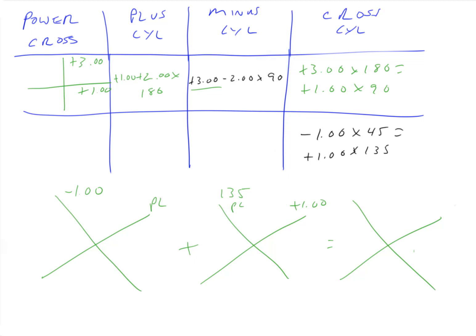Okay, so what's our power cross going to look like? Well, the power cross from this is easy. It's going to be a minus one over here because minus one plus plano is minus one. And it has to be a plus one over here because plano plus one equals plus one. So now we know what our power cross looks like.